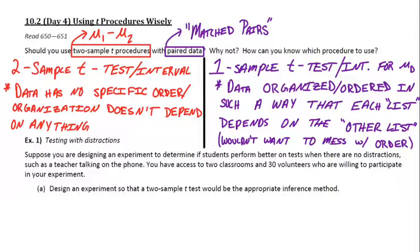So that's really the giveaway right there. Am I supposed to use a matched pairs or a two sample? Well, if the data is organized so that the first list and the second list sort of depend on each other, and you really wouldn't want someone to come up and mess up the order of those lists, then that's when you choose matched pairs.